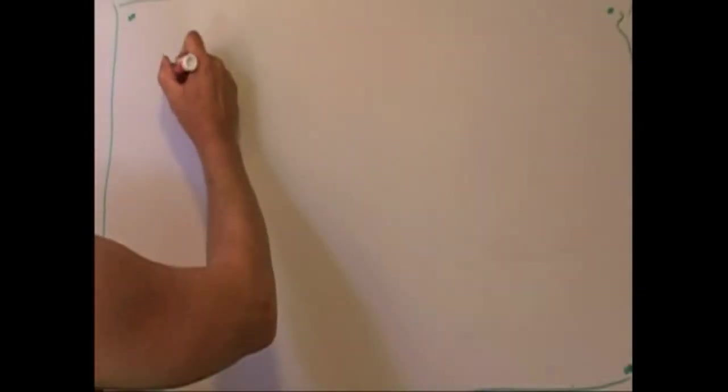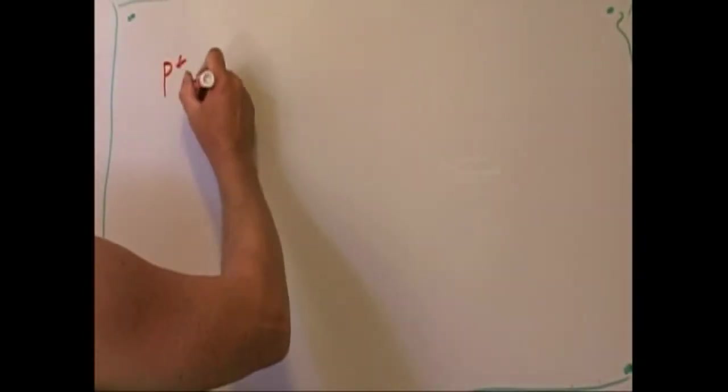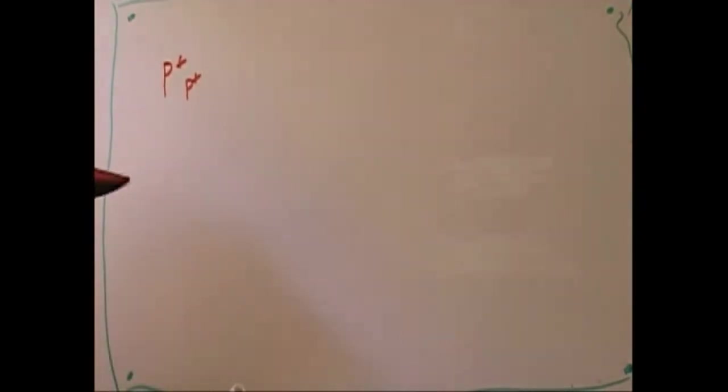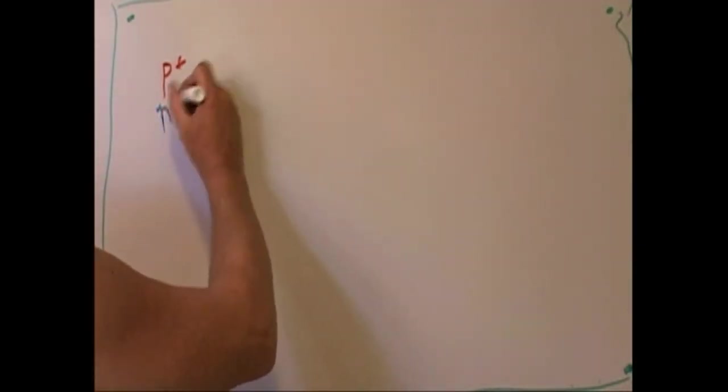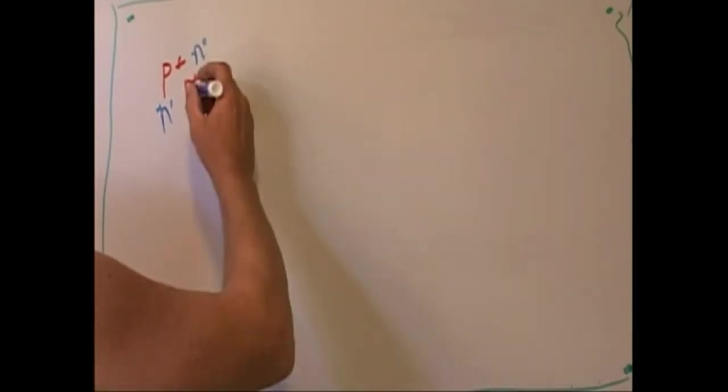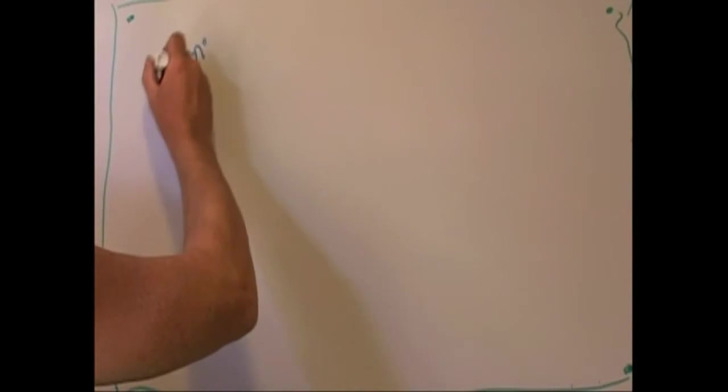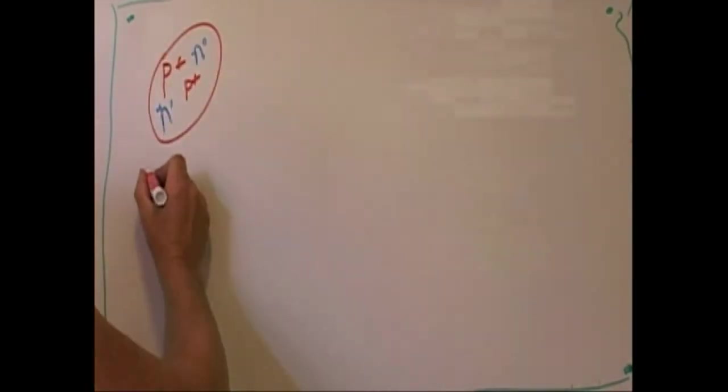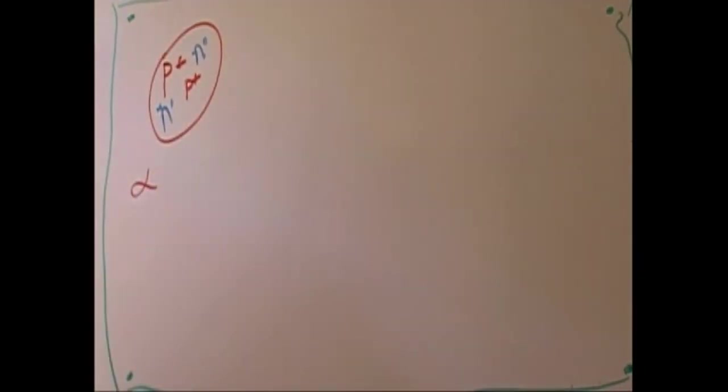For you but I'll just draw it as you watch here. Proton, proton, neutron, neutron. This is what's known as the alpha particle. Greek letter alpha. Helium. This is what the sun's making.